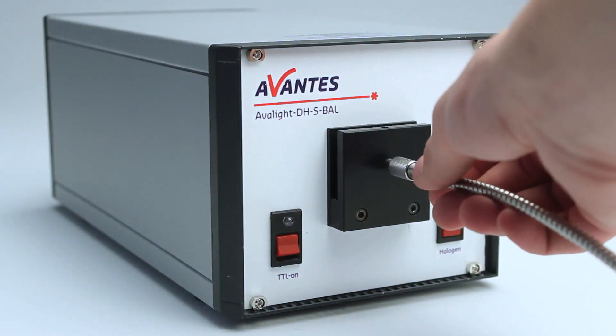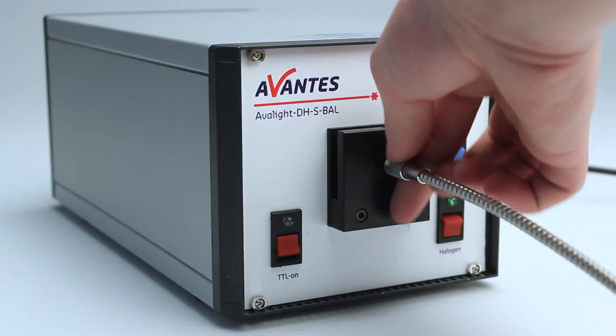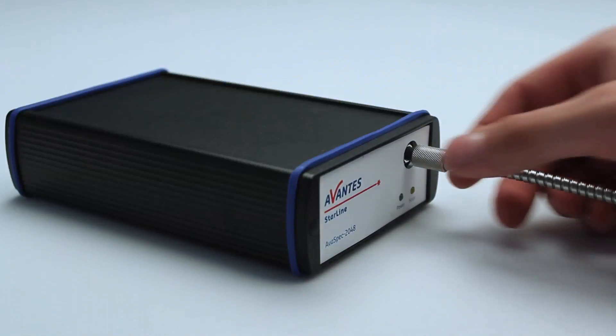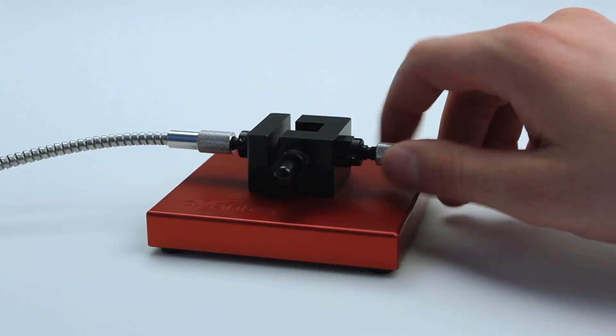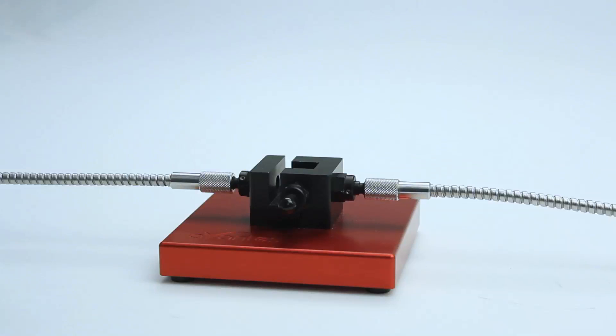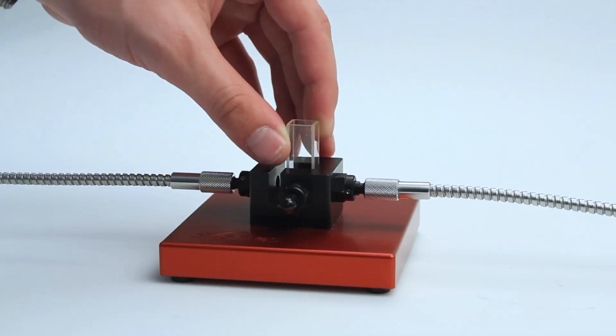Start by connecting the light source to the cuvette holder. Afterwards, connect the spectrometer to the cuvette holder. Put the cuvette in the cuvette holder and place the black cap.